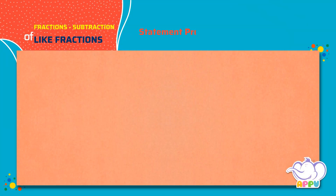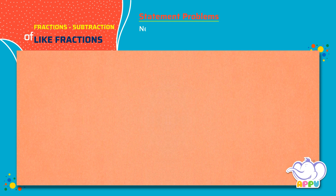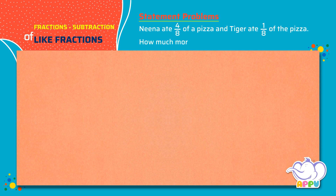Statement problems. Nina ate 4 by 8 of a pizza and Tiger ate 1 by 8 of the pizza. How much more did Nina eat than Tiger?